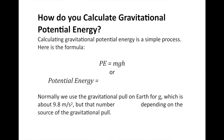Calculating gravitational potential energy is actually pretty easy — in fact, it's even simpler than calculating kinetic energy. We use the formula PE equals MGH, or potential energy equals mass times gravity times height. Let's go ahead and try a sample problem so you can see what we're talking about here.